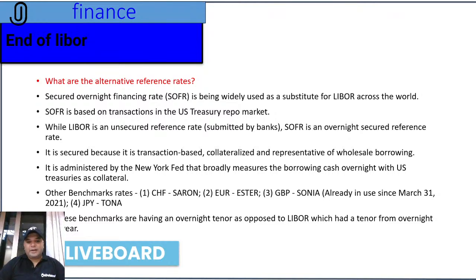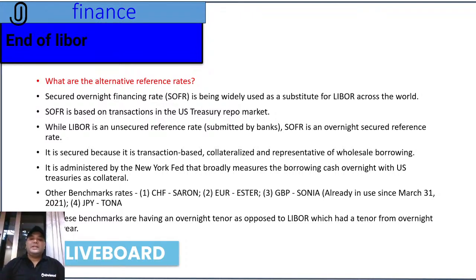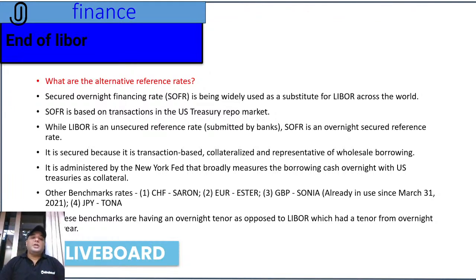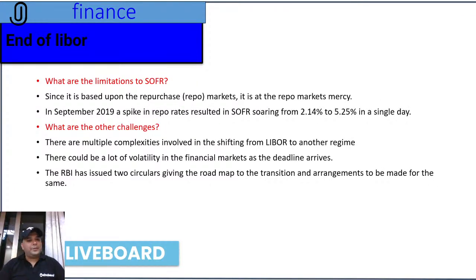There are other benchmark rates also in use since March 31st, 2021: CHF SARON linked to the Swiss franc, EUR ESTER linked to the euro, GBP SONIA linked to the British pound, and JPY TONA linked to the Japanese yen. Apart from SOFR, these are the four other benchmark rates used by the international banking system to determine interest rates. Importantly, all these benchmarks have an overnight tenure, as opposed to LIBOR which had a tenure from overnight to one year.